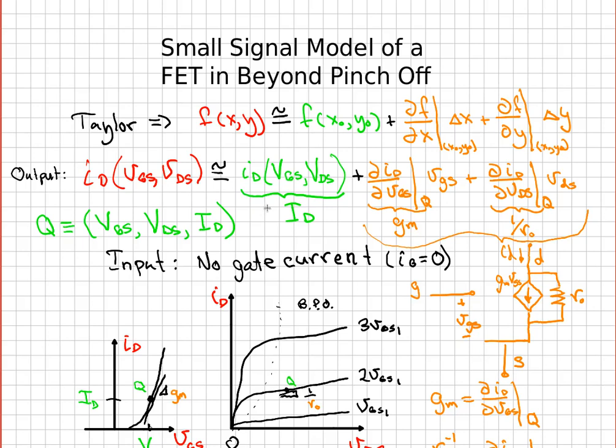And we can write that as the large signal value, which is the capital I sub capital D, or the little i sub big D, the total I_D evaluated at the Q point V_GS and V_DS.